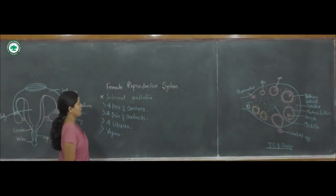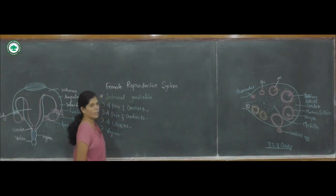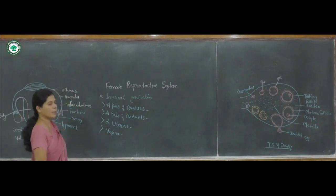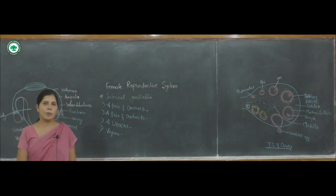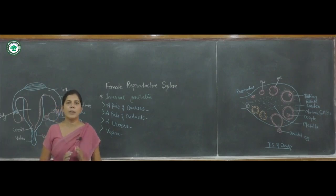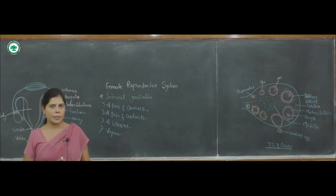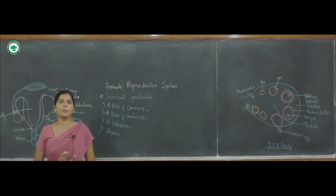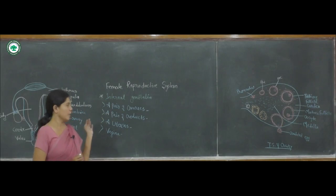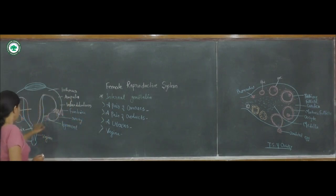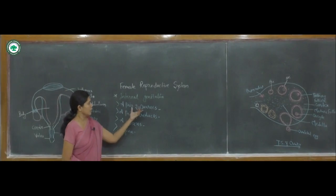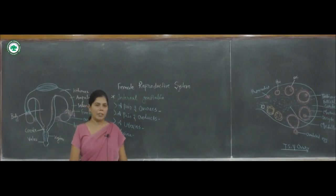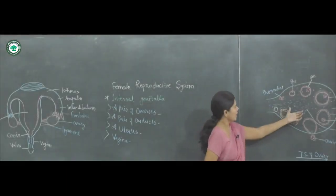Starting with the pair of ovaries — ovaries are present in pairs, located horizontally on both sides of the uterus. The ovary is the female primary sex organ, also called the female gonad, in which development and production of the female gamete takes place — that is, the production and development of the ovum is carried out in the ovary.